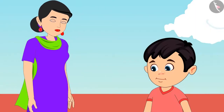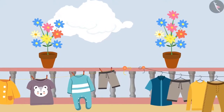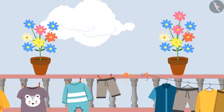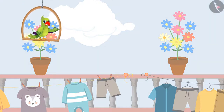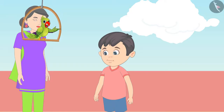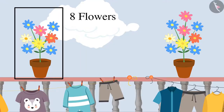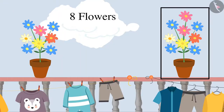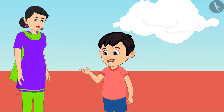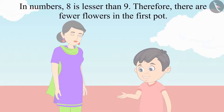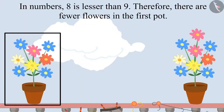Now let's look at all the pots. Which of these pots has fewer flowers? Can you count the number of flowers in these pots and tell which flower pot has fewer flowers? Come on, let's see what Chotu answers. There are 8 flowers in that flower pot and 9 flowers in the other flower pot. In numbers, 8 is lesser than 9. Therefore, the first pot has fewer flowers.